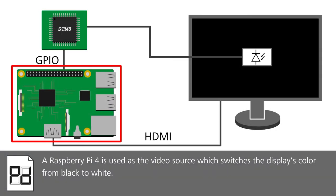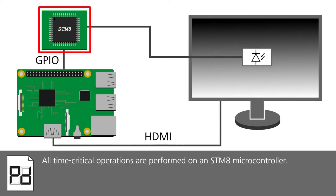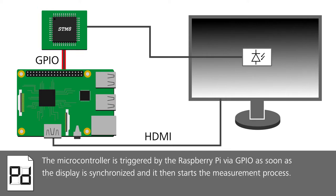A Raspberry Pi 4 is used as the video source, which switches the display's color from black to white. All time-critical operations are performed on an STM8 microcontroller. The microcontroller is triggered by the Raspberry Pi via GPIO as soon as the display is synchronized, and it then starts the measurement process.